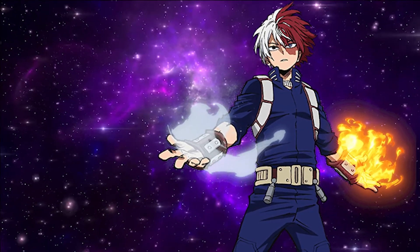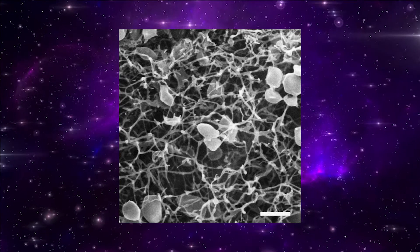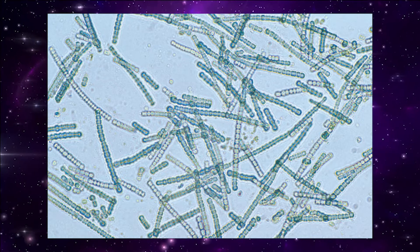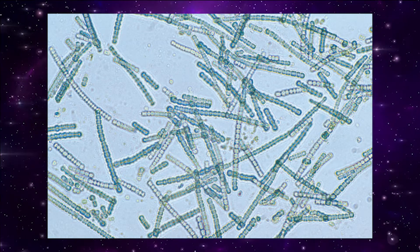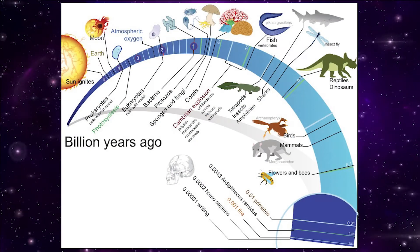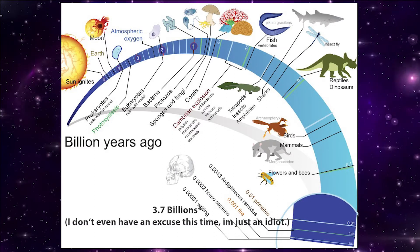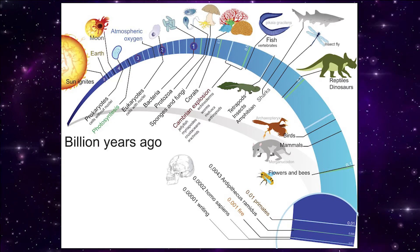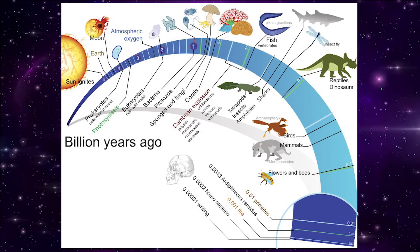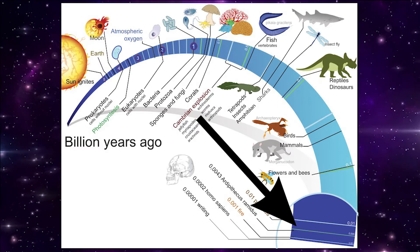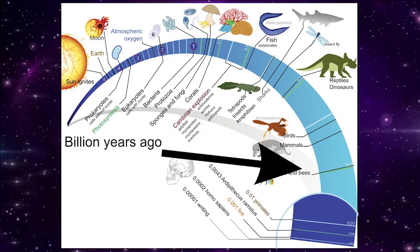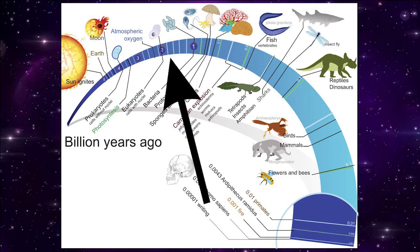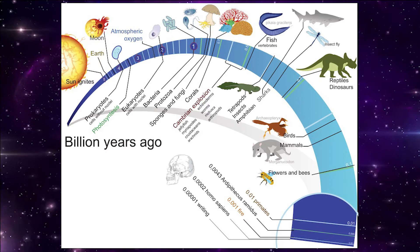On the other hand, life forms living in geothermal vents are probably the closest thing to first life on Earth, meaning there's about 3.7 billion years of good old evolution between them and humans. When keeping in mind that humans and chimps had their last common ancestor about 5 million years ago, that's quite a long time.